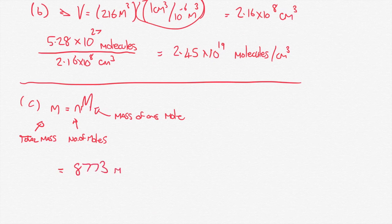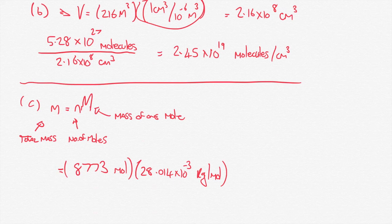So the total mass is equal to the number of moles times the mass of one mole. Straightforward enough. So we've got 8,773 moles and we've got a molar mass of nitrogen of 28.014 by 10 to the minus 3 kilograms per mole. Multiply the two of those together and that's going to give us a total mass of nitrogen in the room of 246 kilograms. So in our 216 meter cube lecture hall, even though it might be surprising when you're looking around, there are a total of 246 kilograms of air in that space.